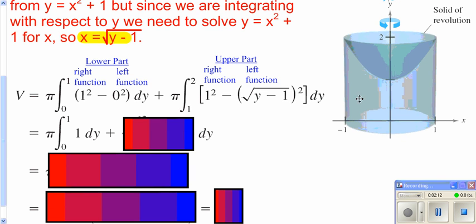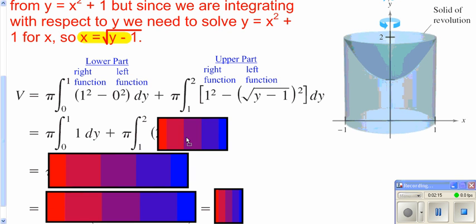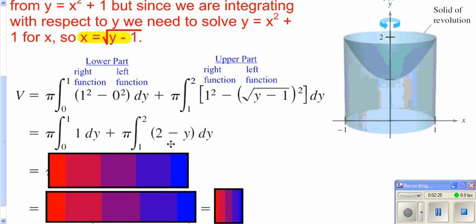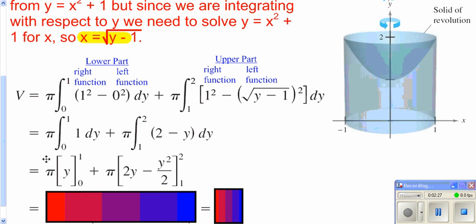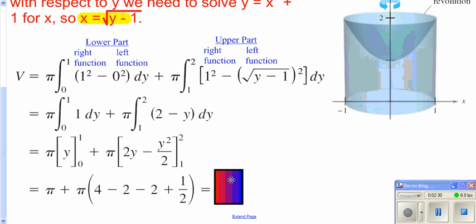And so we get this, and your shape formed is what you have over here. You just get 1 minus this here, which would be a y minus 1. Distributing the minus gives you 1 minus y plus 1, or this. Now you do just your basic integration and evaluating it, and you get 3π/2.